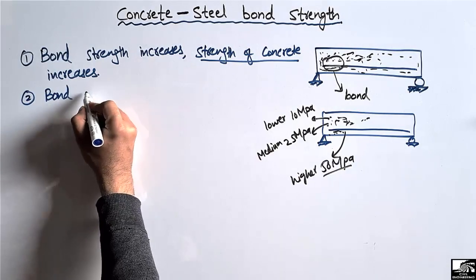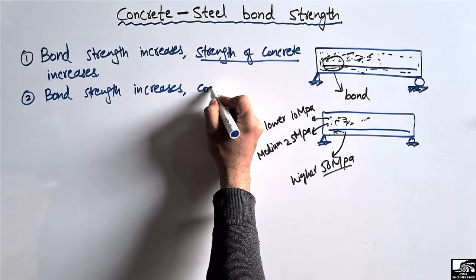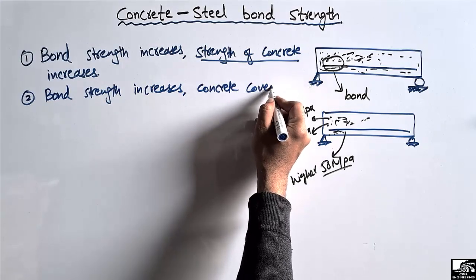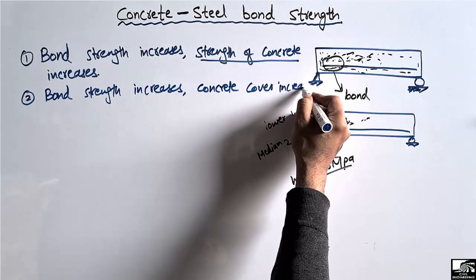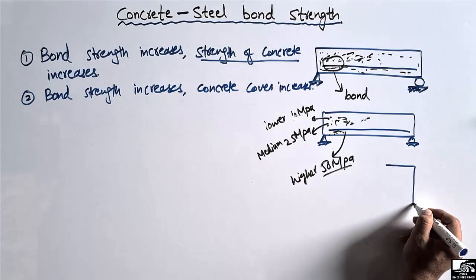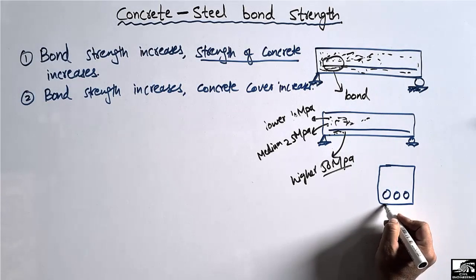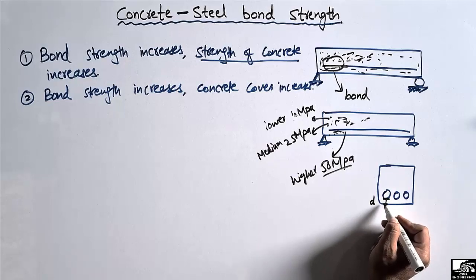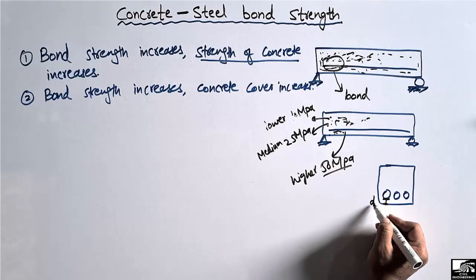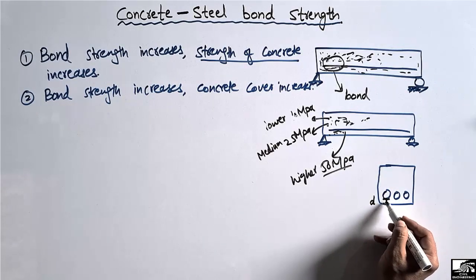The second factor is concrete cover. Bond strength increases if the concrete cover increases. The higher the concrete cover, the higher the bond strength. Concrete cover is the distance from the bottom of the beam up to the reinforcement steel bar — represented here as D. If we increase this distance D, there is more space for bonding, which is why higher cover leads to higher bond strength.